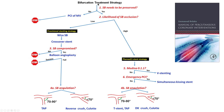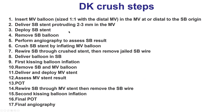Using a general bifurcation algorithm, the first question is whether the side branch needs to be preserved. Both the obtuse marginal and the LAD obviously need to be preserved. Because both the LAD and OM1 had significant baseline lesions, the risk of occlusion was high, placing us into a planned two-stent strategy. For angulation less than 70 degrees, the technique is DK crush or culotte; otherwise, T-stenting can be done if angulation is close to 90 degrees. We decided to use the DK crush in both bifurcations.